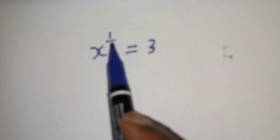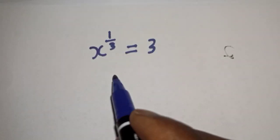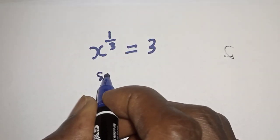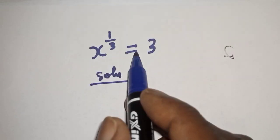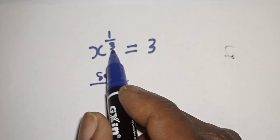Hello, welcome to Magist. x raised to power 1 over 3 is equal to 3. Solution. We want to find the value of x from this equation. x raised to power 1 over 3 is equal to 3.